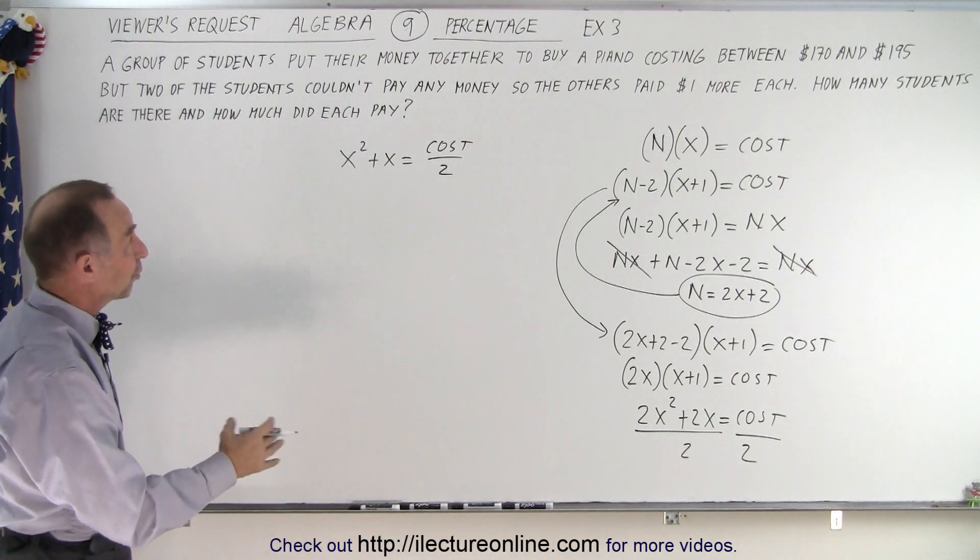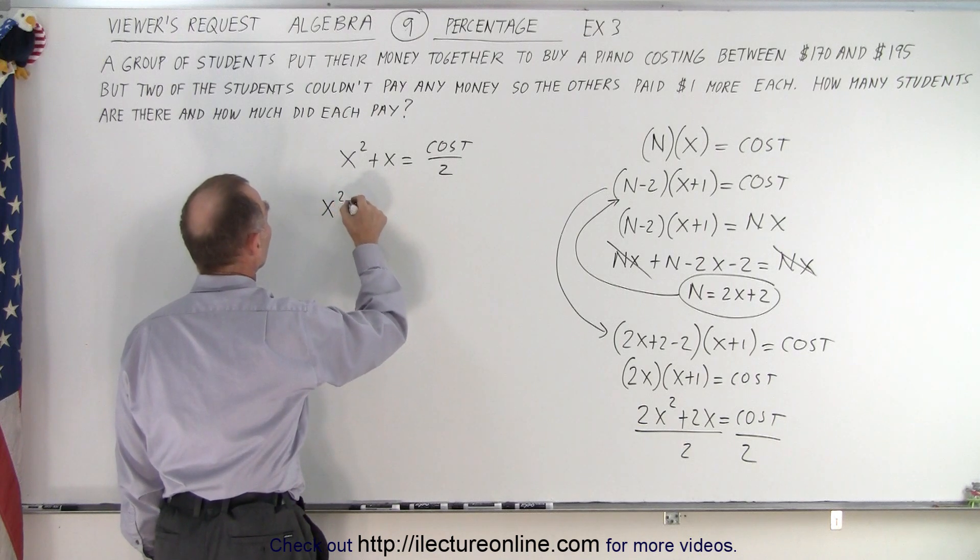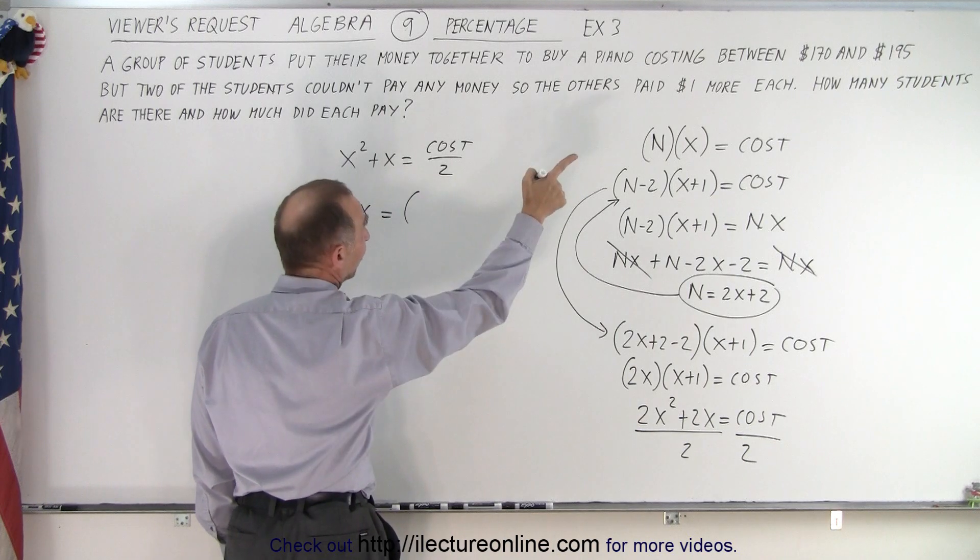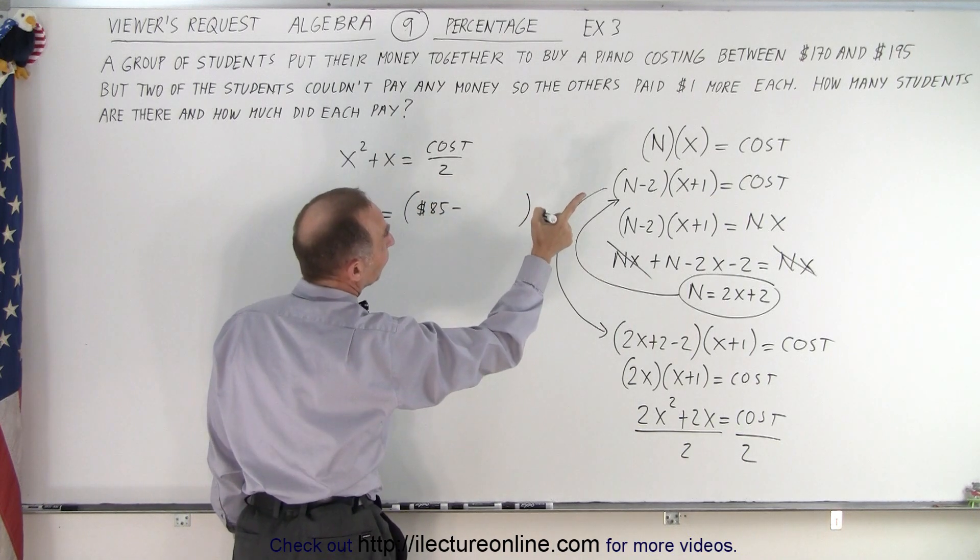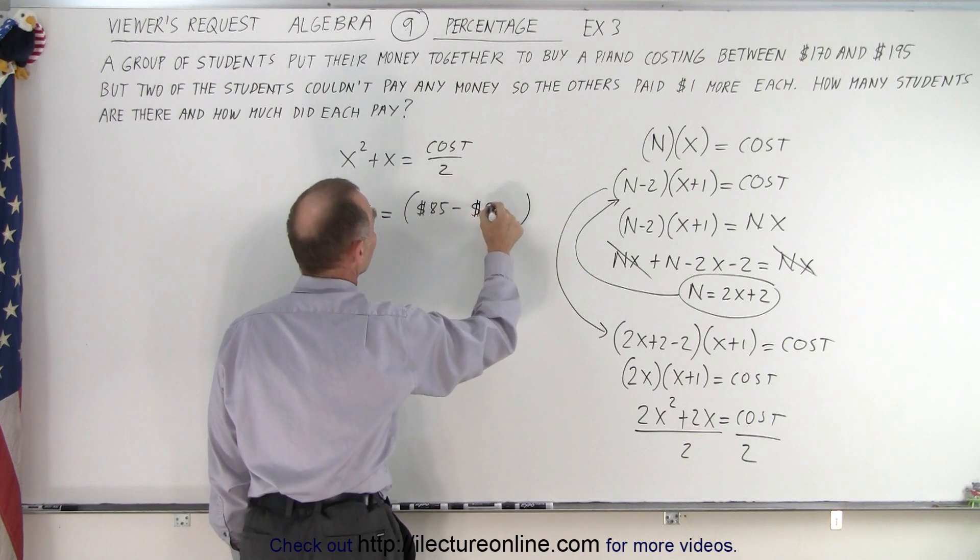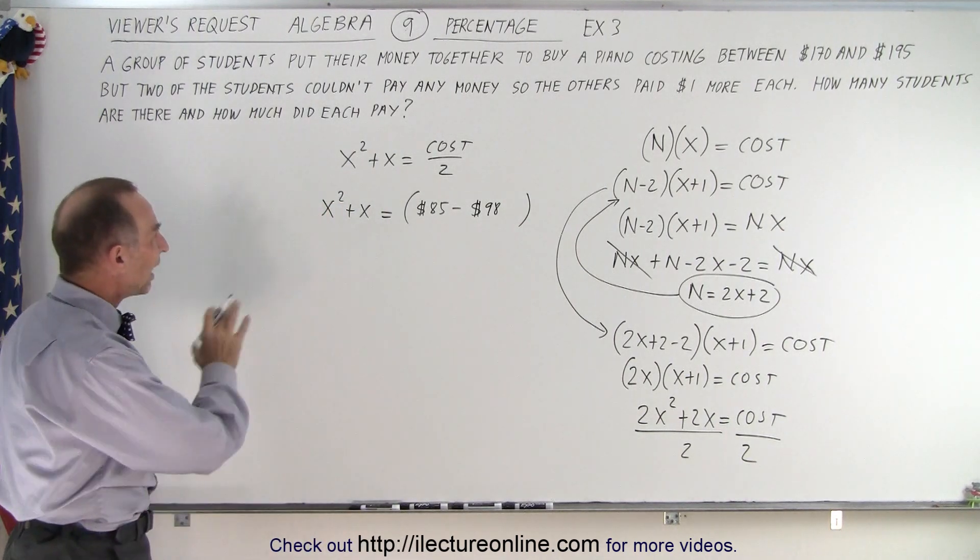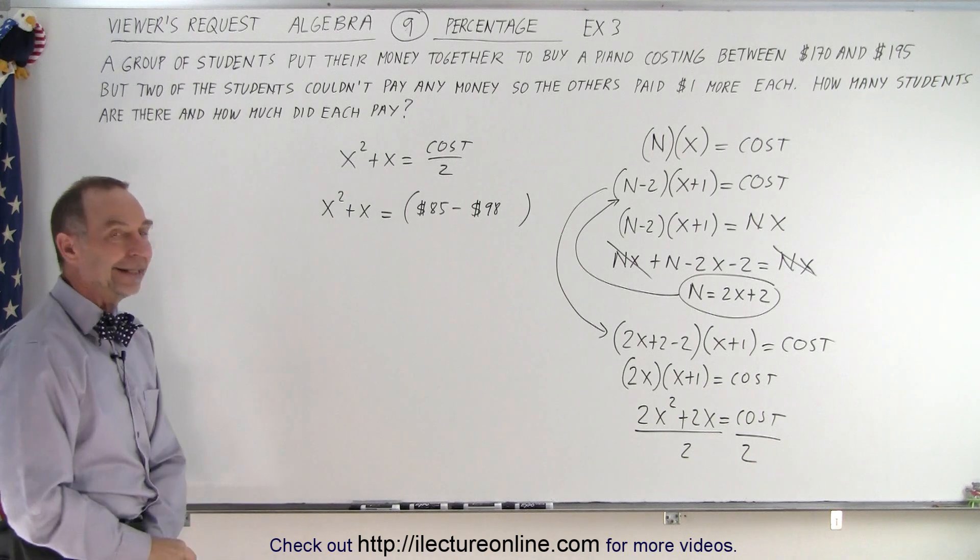And since the cost is between $170 and $195, that means that x² + x must be equal to some number between half of 170, which is 85, and half of 195, which would be, let's say 196 would be about 98, or 97.5. So I'll just round it up to 98. So x² + x must be somewhere between 85 and 98.